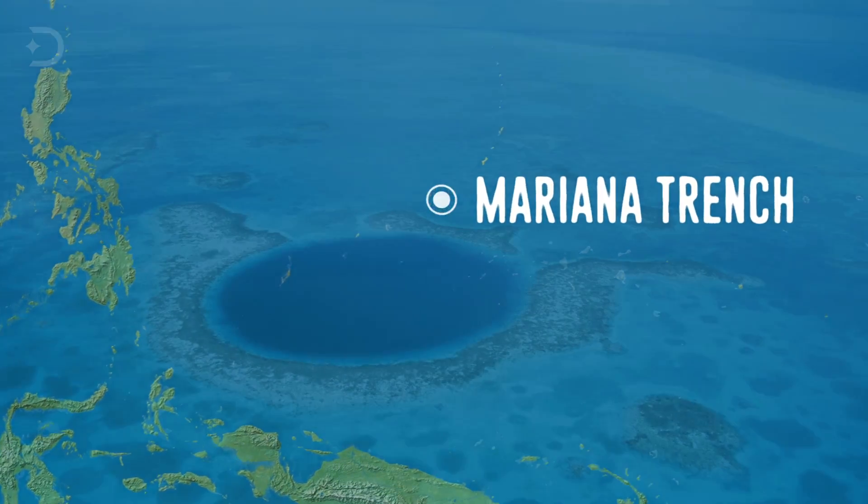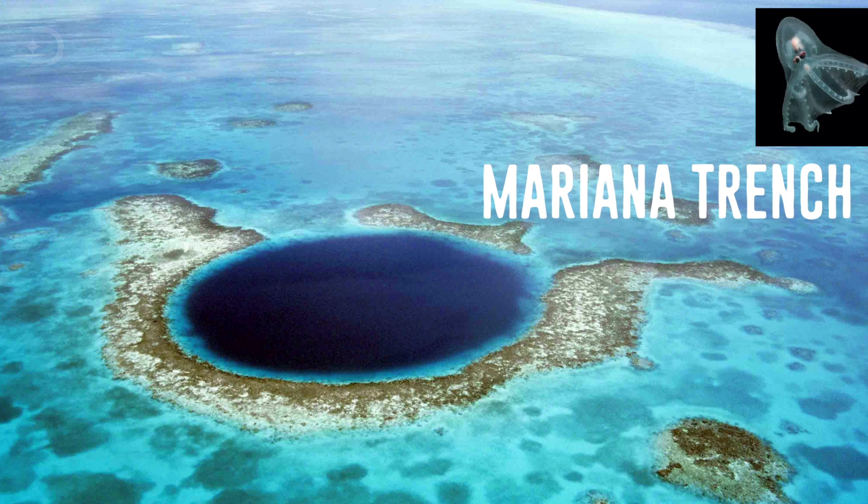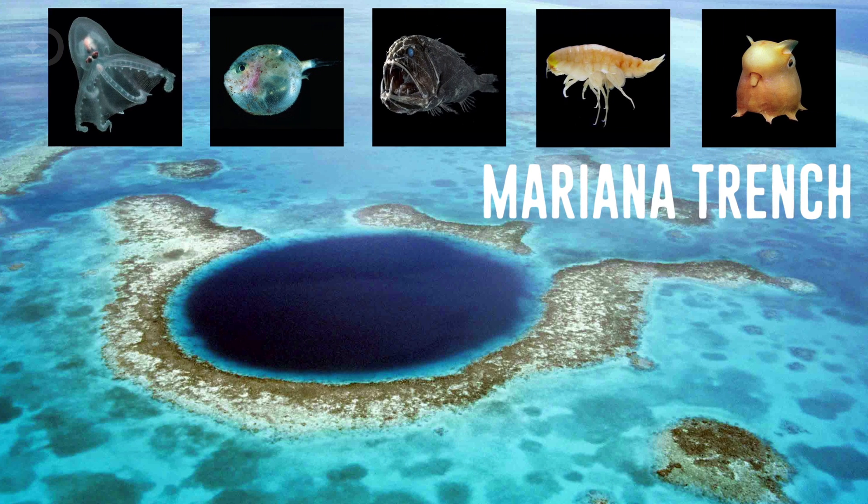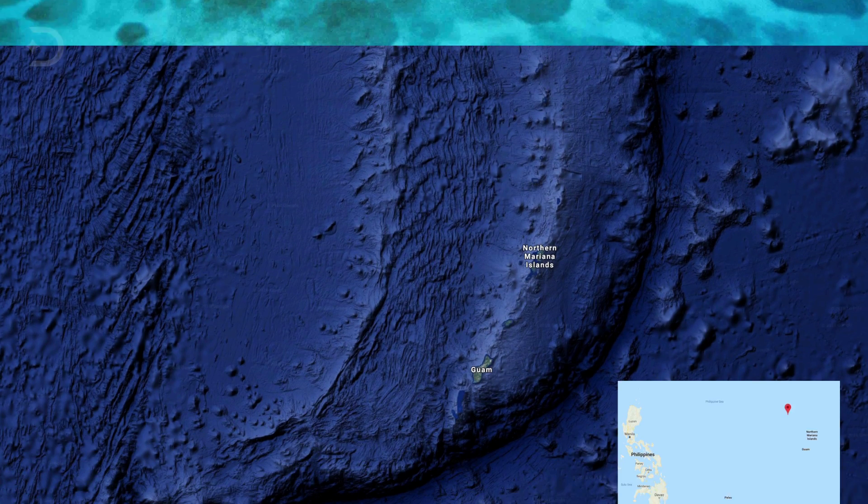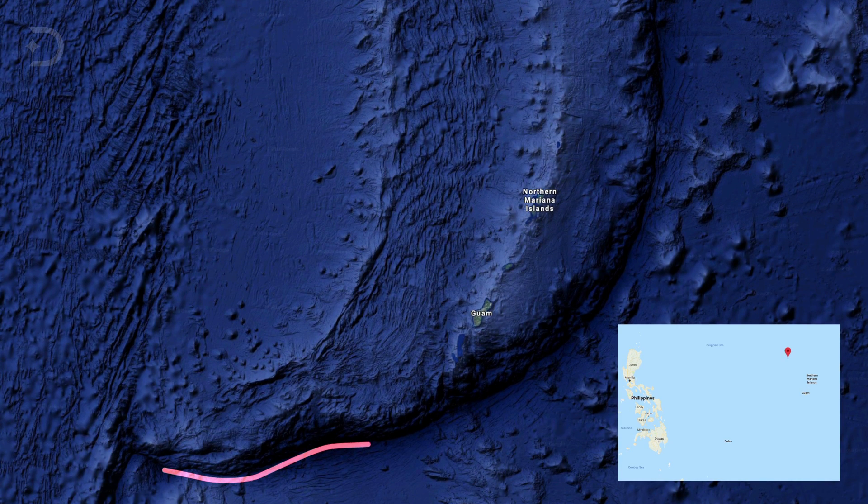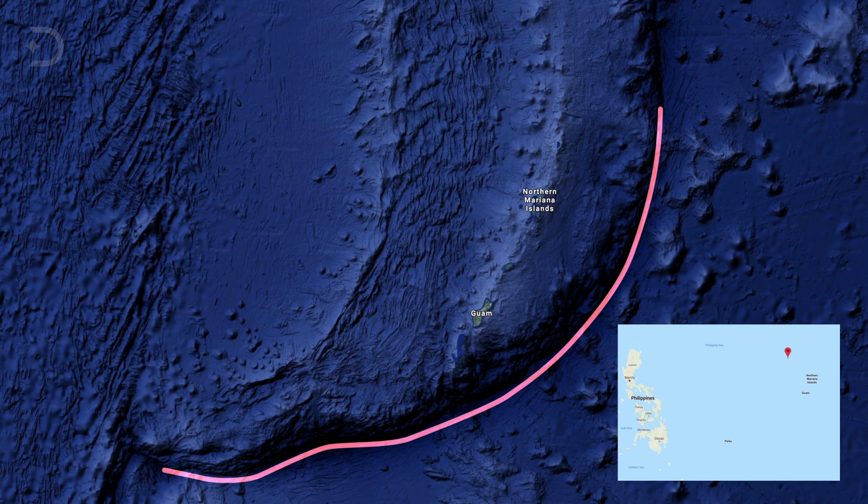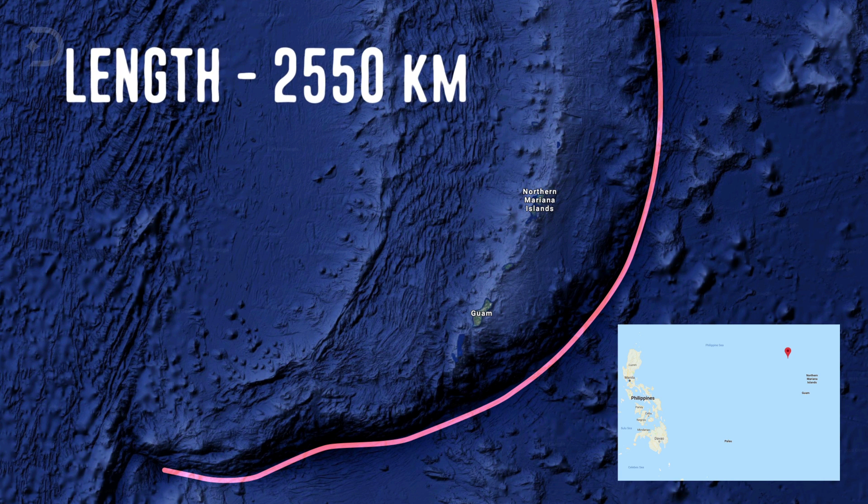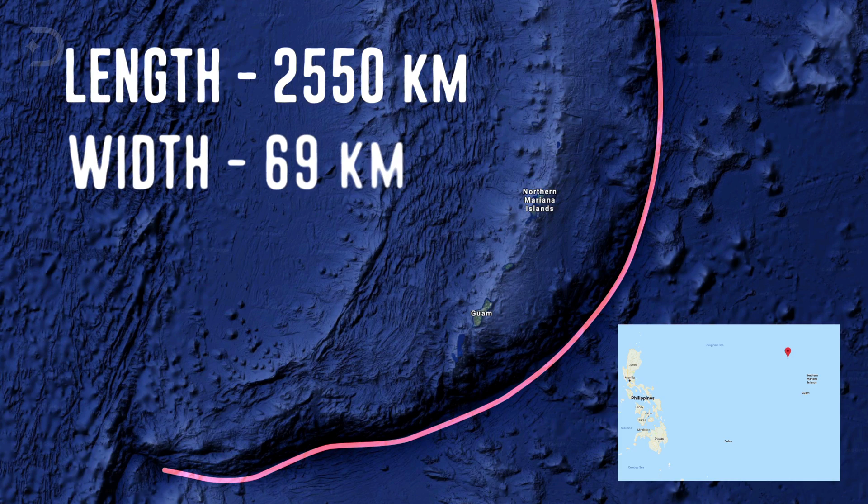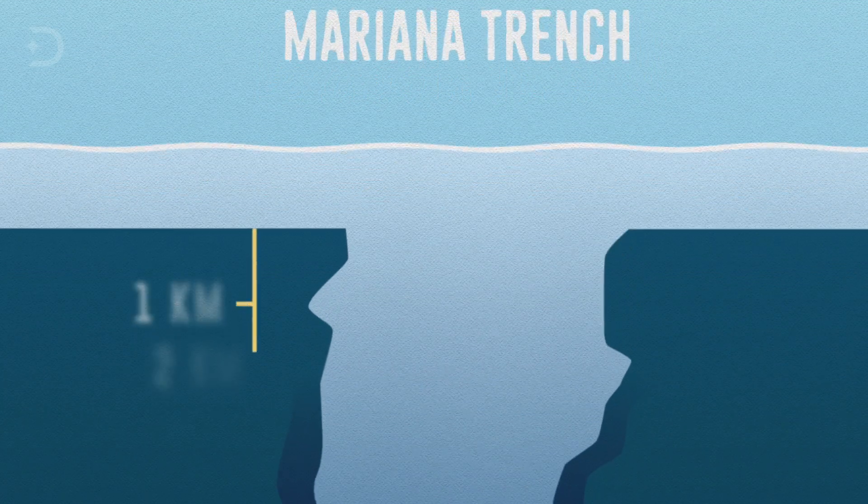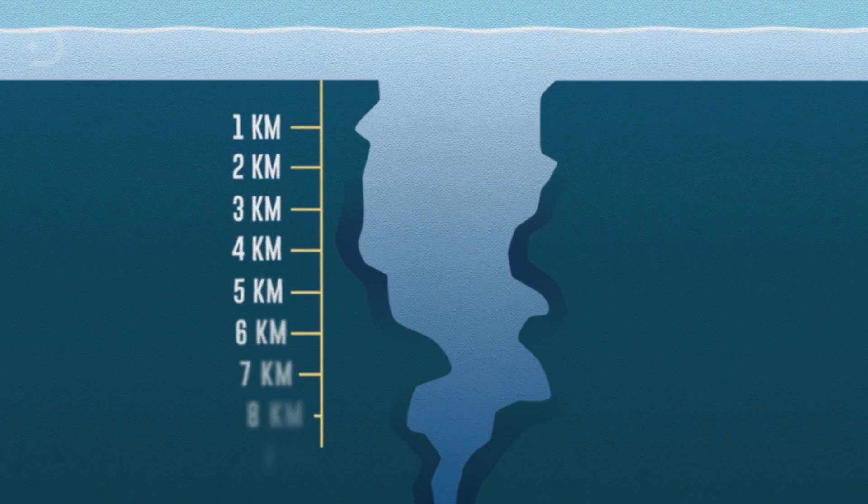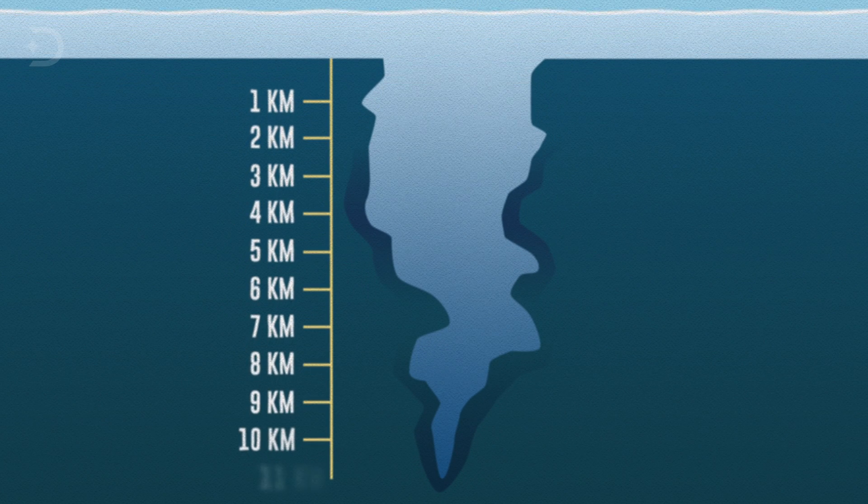Deep down under the surface, the area is an otherworldly environment full of alien-looking creatures, and it is considered the deepest part of Earth's surface. It appears from satellite images as a crescent-shaped scar that stretches 1,584 miles long and is 42 miles wide. Its deepest point is opposite of the cruising altitude of a passenger jet at 36,000 feet, below the surface.